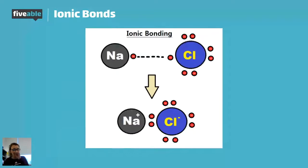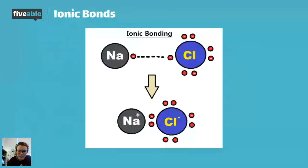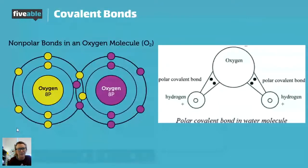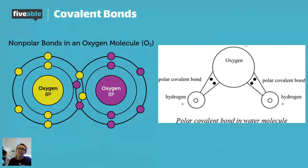Next, we have covalent bonds. Covalent bonds are going to be a lot more friendly because instead of the electrons being transferred, these guys are actually just going to share them and you can see they actually will overlap. On the left here, these two oxygens, you'll see they're overlapping their electron orbitals and that's how they form their bonds.